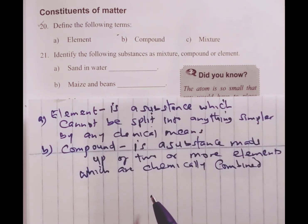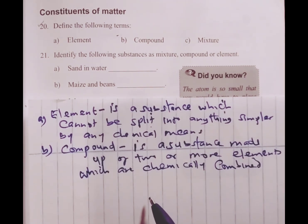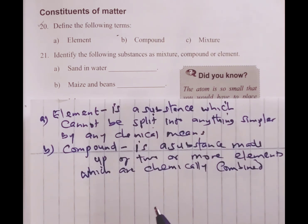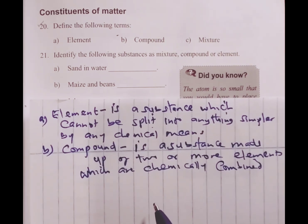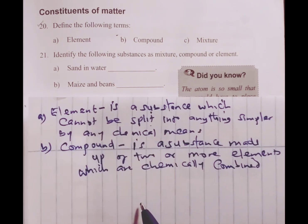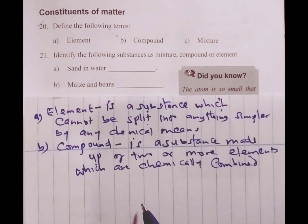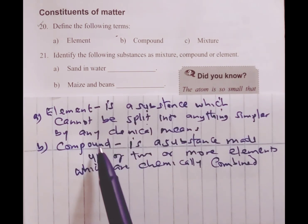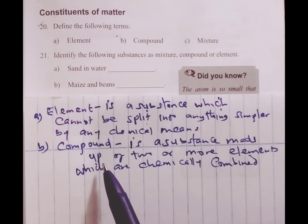Meaning, for a compound to be formed, the elements combining must be chemically combined. And for us to chemically combine two or more elements to form a compound, heat is usually involved.